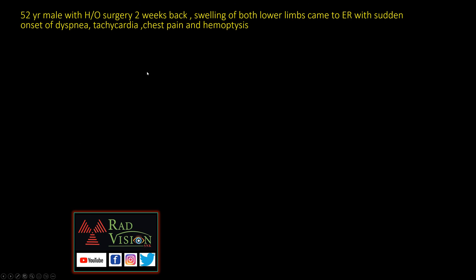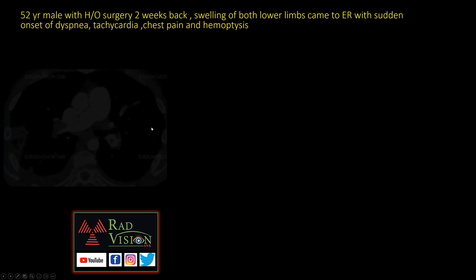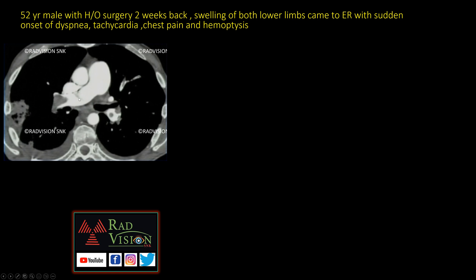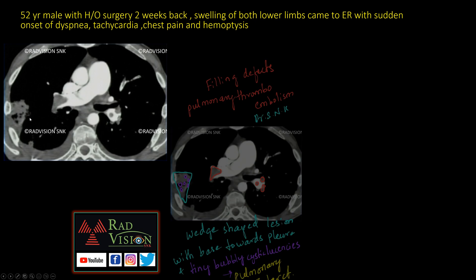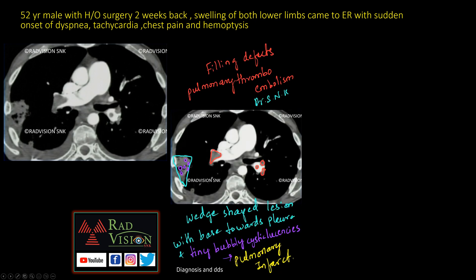Next case: a 52-year-old male with surgery two weeks back, presenting with lower limb swelling, sudden dyspnea, tachycardia, chest pain, and hemoptysis — suspect pulmonary thromboembolism. CT pulmonary angiogram shows filling defects in the right main pulmonary artery and segmental branches. There is also a wedge-shaped opacity peripherally placed with pleural effusion. A wedge-shaped opacity with base towards the pleura, apex pointing towards the hilum or vessel, and multiple cystic or bubbly lucencies favors pulmonary infarct over consolidation.